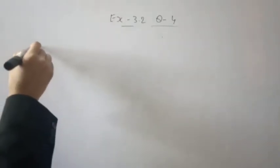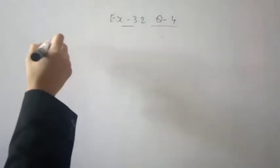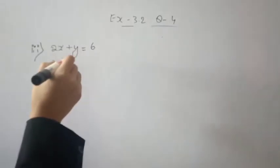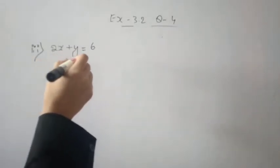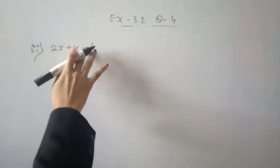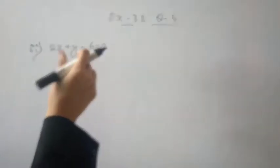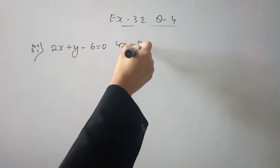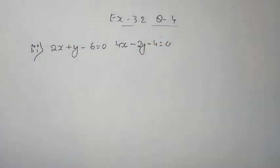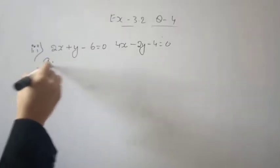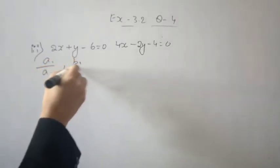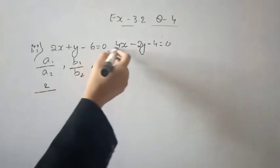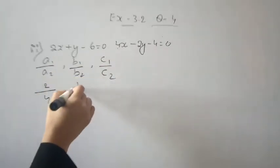Next, question number 4, third pair. The equations are: 2x plus y is equal to 6, and 4x minus 2y is equal to 4. Rearranging: 2x plus y minus 6 is equal to 0, and 4x minus 2y minus 4 is equal to 0. Now compare the ratios to find the solution.